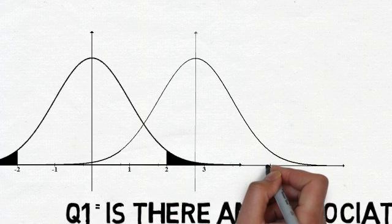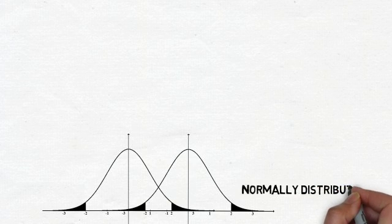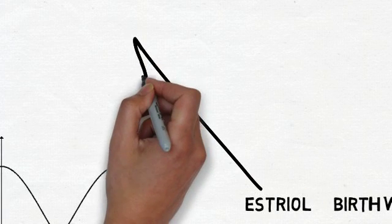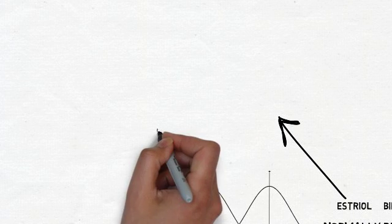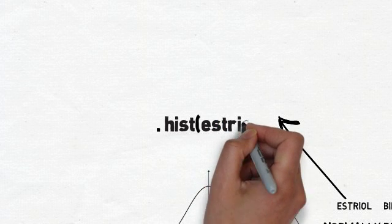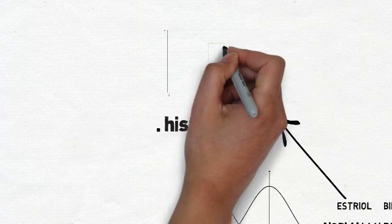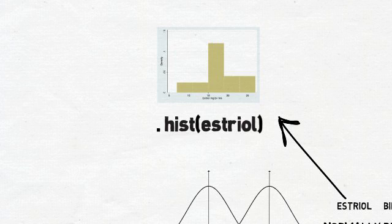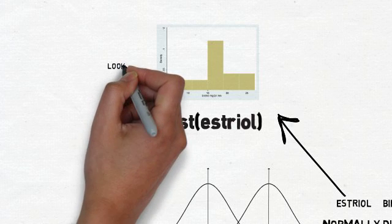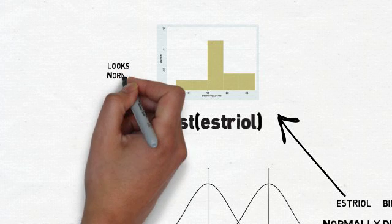Before we can compare the distributions, we have to check to see if the variables are normally distributed — remember the normal bell curve? We'll do that by conducting three different tests. The first test is a histogram, so let's make a histogram in Stata using the command 'hist esterol'. Although this doesn't look exactly like the bell curve, it's close enough — it doesn't have big pieces on either end with nothing in the middle, or everything over to one side, which are examples of non-normal distributions. It goes up in the middle, so we can say that it is normally distributed.